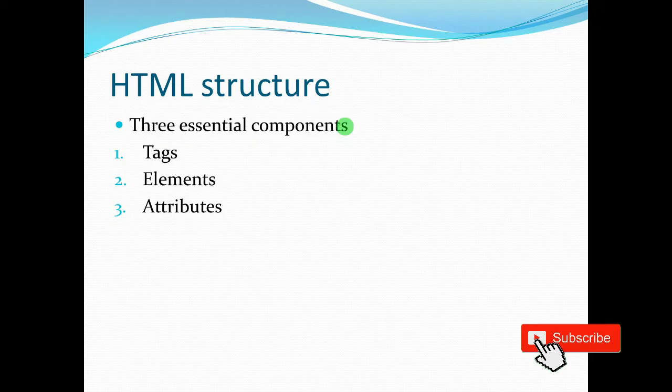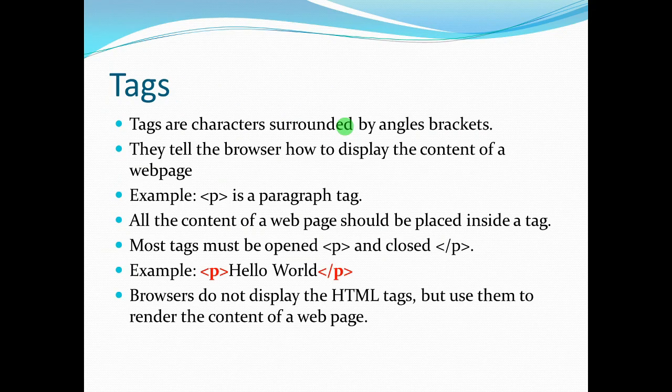In HTML there are three essential components you need to know about: the HTML structure, tags, elements, and attributes. Basically, tags are characters surrounded by angled brackets.